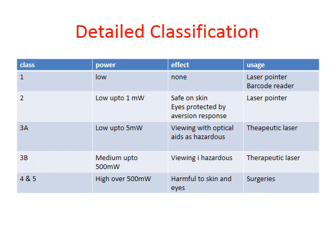Generally class 1 and 2 are used for laser pointers, and in malls the barcode reader is a class 1 type of laser. In OPDs, we mainly use class 3A and 3B laser.